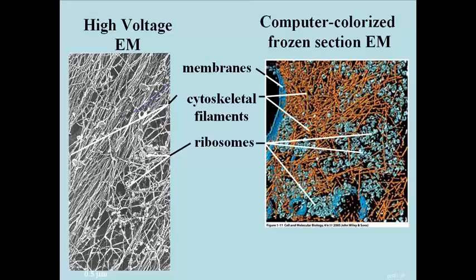The computer-colorized frozen section electron micrograph on the right shows cytoskeletal filaments that lie just under the cell membrane. The region just under a cell membrane is called its cortex. It often contains a high concentration of cytoskeletal filaments, which can explain how a cell maintains its overall shape.